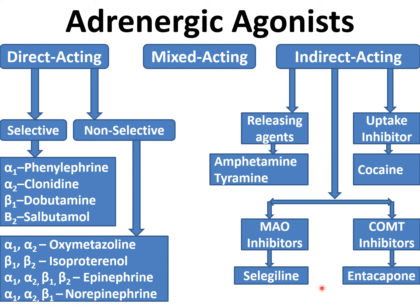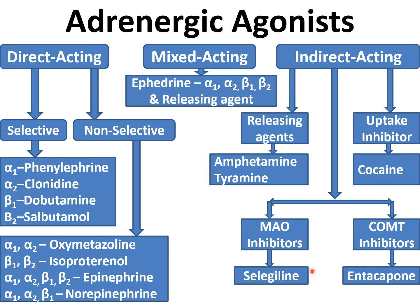Selegiline and COMT inhibitors are both used in Parkinsonism because they increase dopamine levels in the substantia nigra. The third category is mixed acting drugs, which have both direct and indirect mechanisms. A key example is ephedrine — an alkaloid from Ephedra vulgaris — which acts on alpha-1, alpha-2, beta-1, and beta-2 receptors directly, and also promotes release of norepinephrine from vesicles.